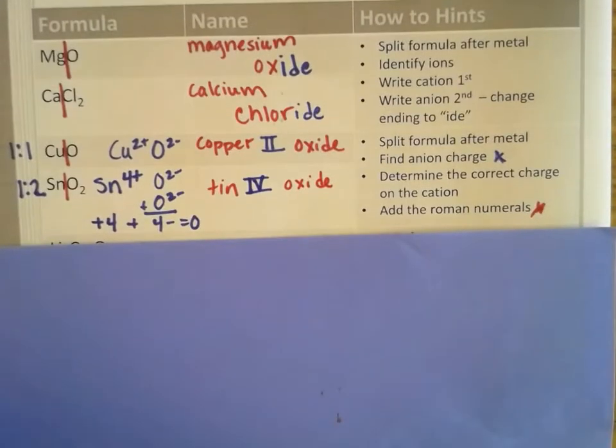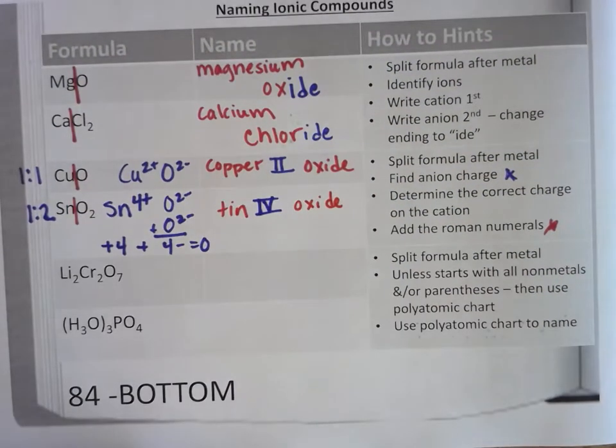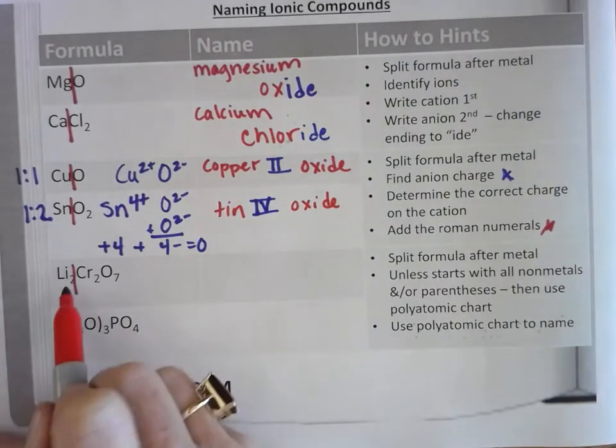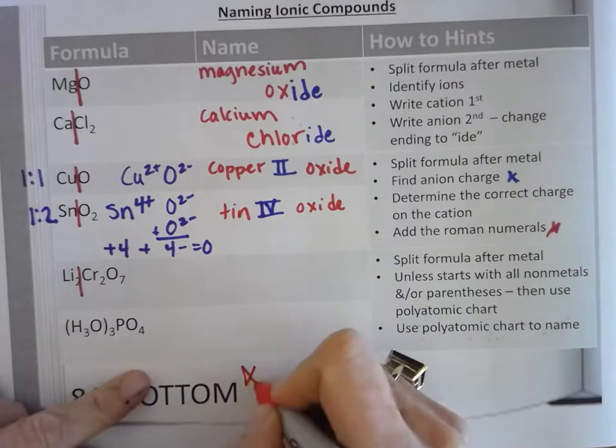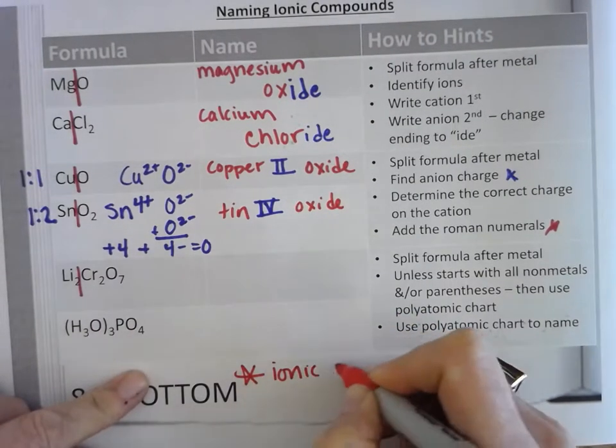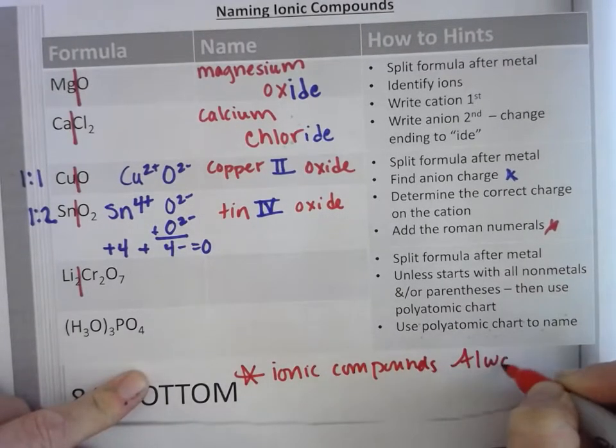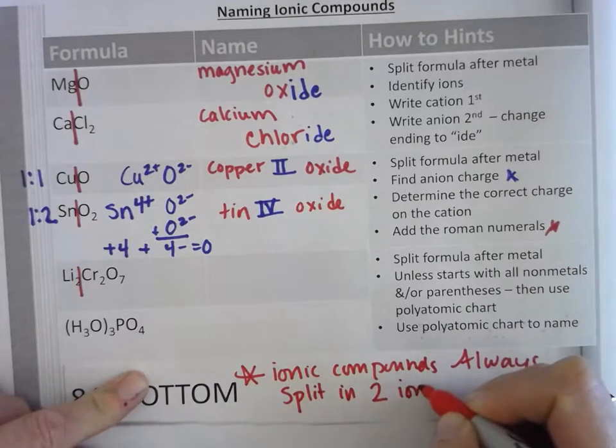And the last one. There's a different type also. So this one has the same starting. Split the formula after the metal. So lithium is a metal, so I'm just going to split it after the metal. And again, everything on this side is one ion and everything in this one is another because all ionic compounds always split into two ions. Always.